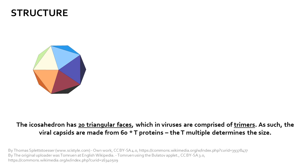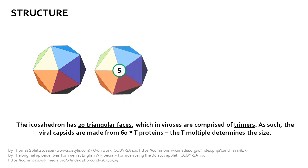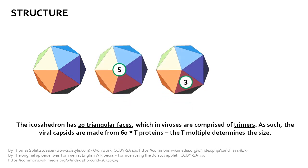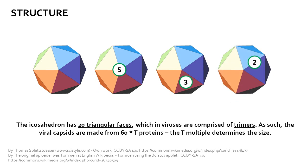An icosahedron has multiple axes of symmetry: specifically a 5-axis, a 3-axis, and a 2-axis. The one that we are most interested in for the calculation of T is the 5-axis.